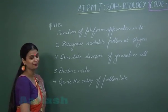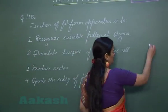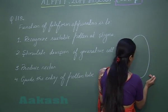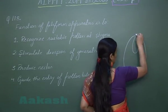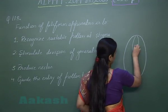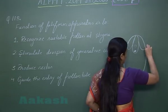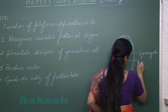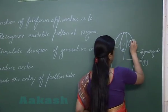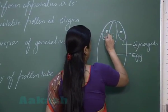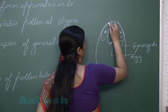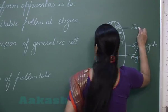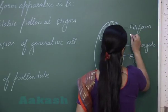Question 118 asks us to select the appropriate function of the filiform apparatus. In the embryo sac, this is the micropylar end and this is the chalazal end. The cell represented here in the embryo sac is the egg cell. The two cells present on the sides are synergids. Towards the micropylar end of the synergid, there are finger-like structures called the filiform apparatus.